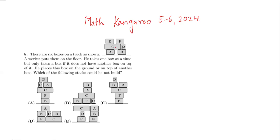You have boxes A, B, C, D, E, and F - these are the six boxes. A worker puts them on the floor. He takes one box at a time but only takes a box if it does not have another box on top of it. He places this box on the ground or on top of another box.